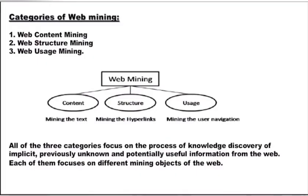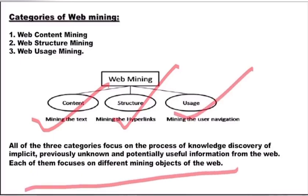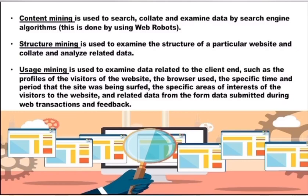There are three categories of web mining: first is web content mining, second is web structure mining, and last one is web usage mining. Each of them focuses on different mining objects of web, लेकिन सबका purpose एक ही होता है — knowledge discover करना जो previously unknown है from the websites. In our next video lecture we will discuss about content mining, structure mining, and usage mining in detail. Thank you for watching.